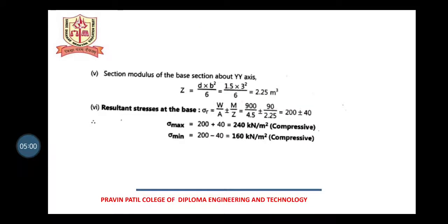Next is to calculate section modulus of the base about y-y axis. Again 1.5 meters is on y axis, so Zy-y is db² by 6 is the formula, so you get the value.